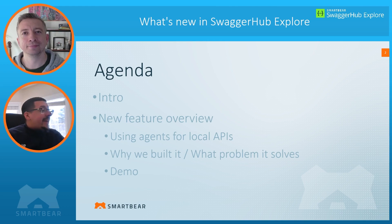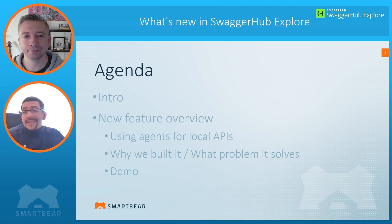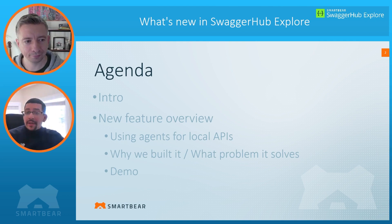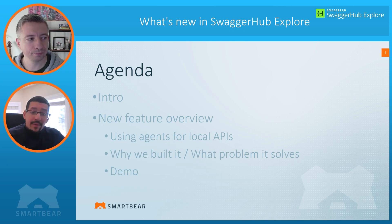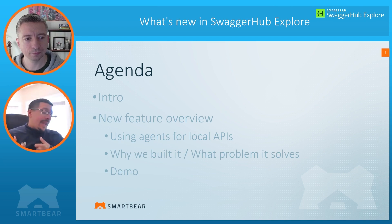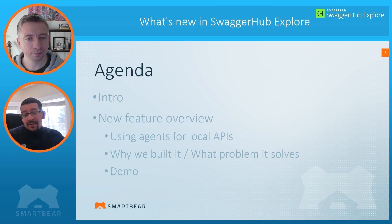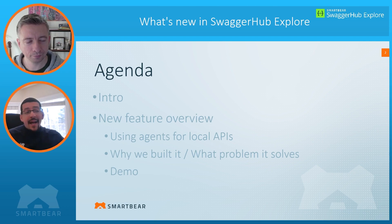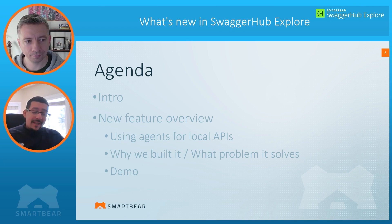During the beta phase of our product, we only supported testing cloud APIs or APIs that were available to the general public. We very quickly understood there was a big need to interact with APIs that sit behind firewalls — internal microservices and other APIs in pre-production phase with no public access that folks need to interact with and better understand. We quickly understood that and added functionality to support these cases.